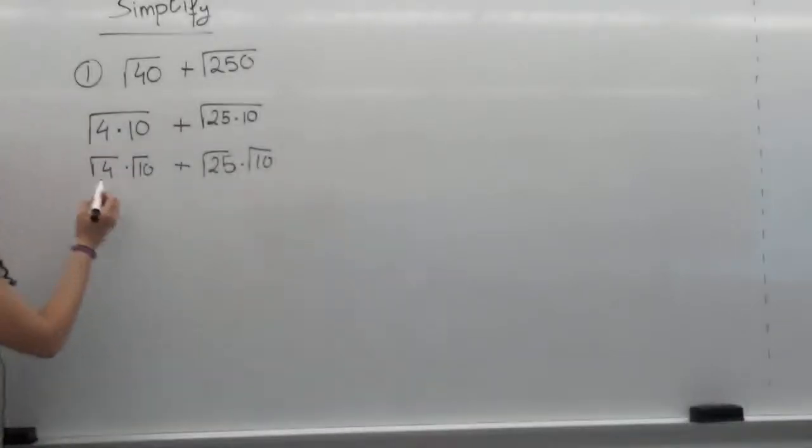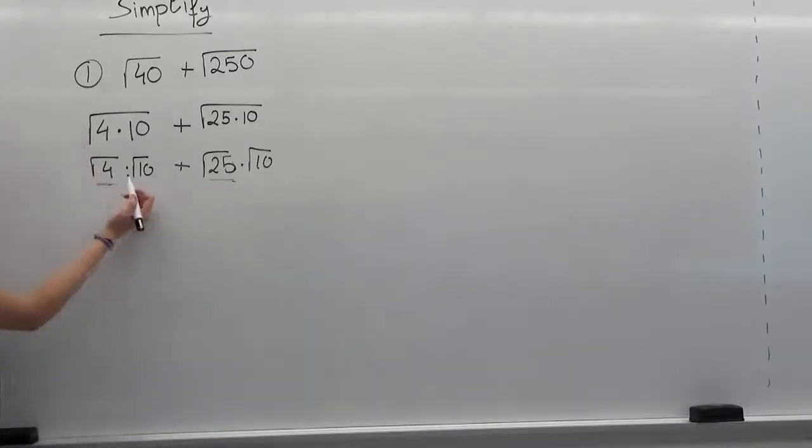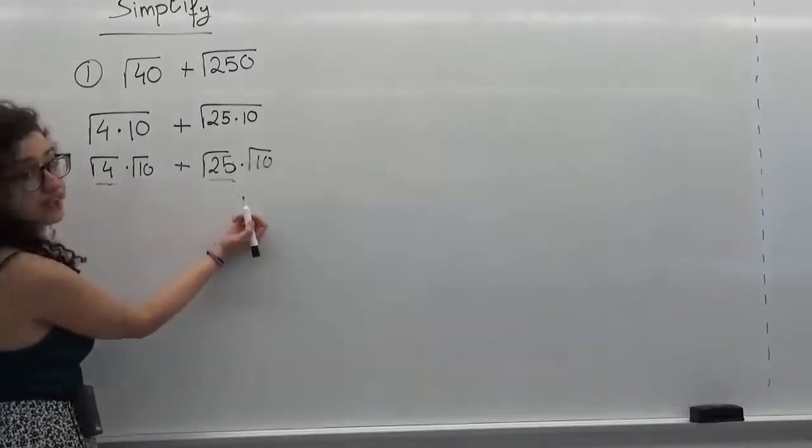Now I have here two perfect squares. One is 4 and one is 25 because 2 times 2 is equal to 4 and 5 times 5 is 25.